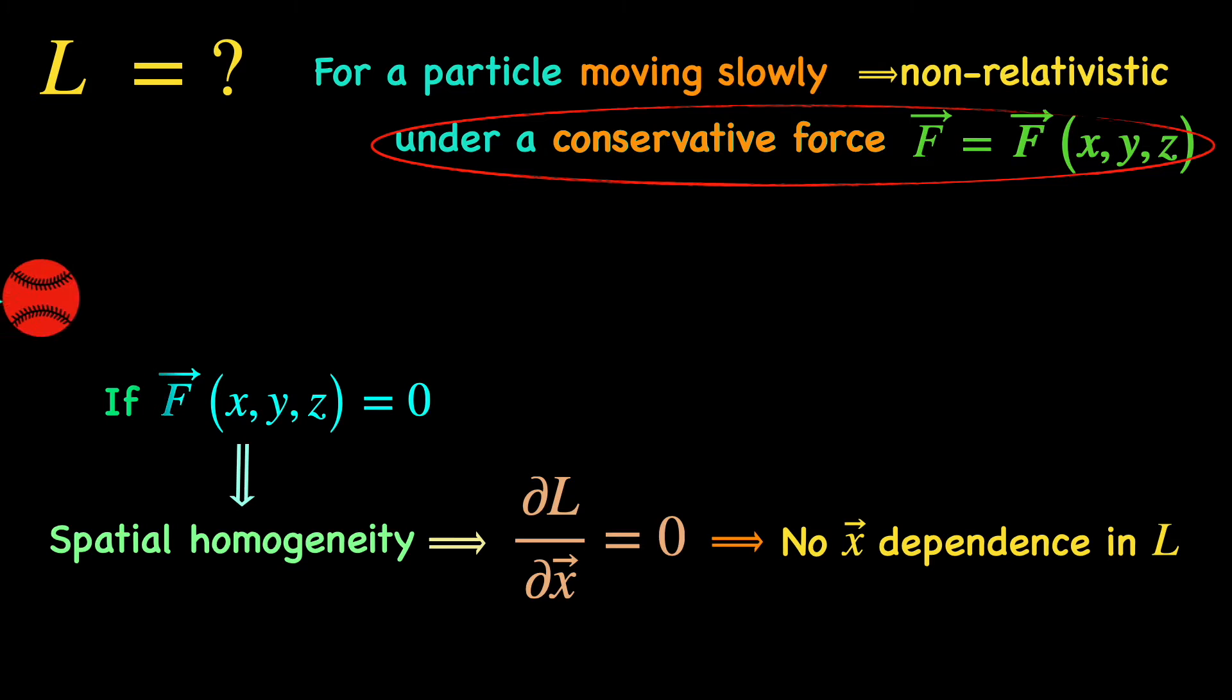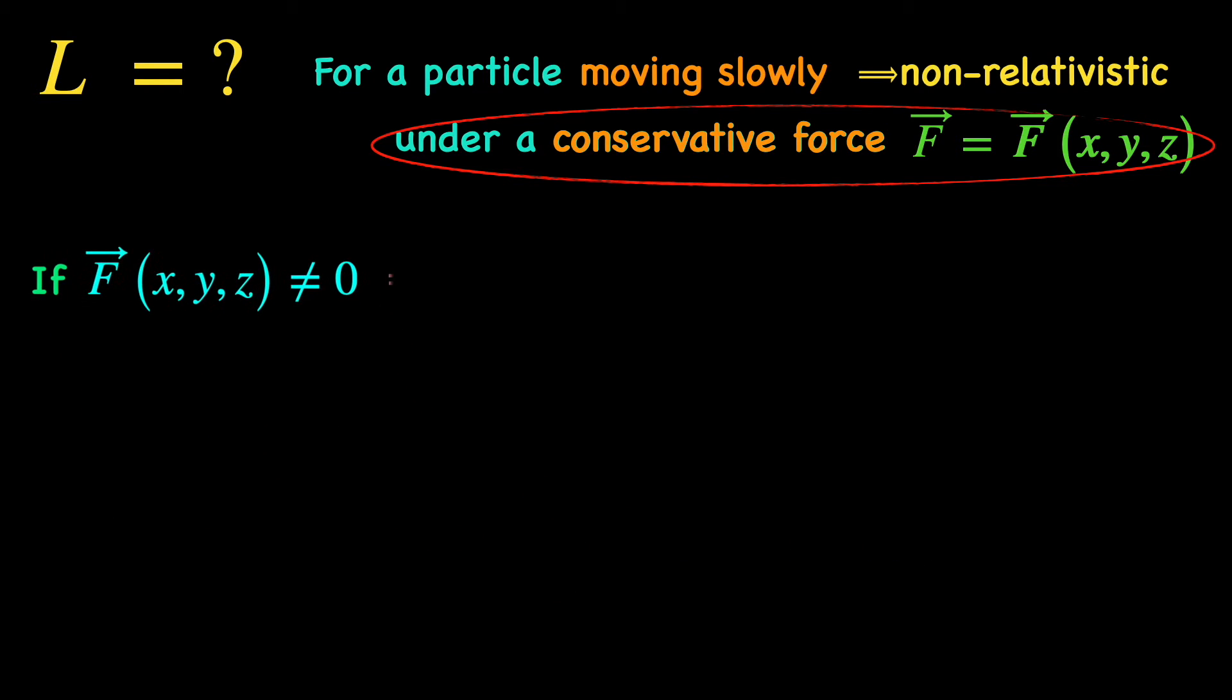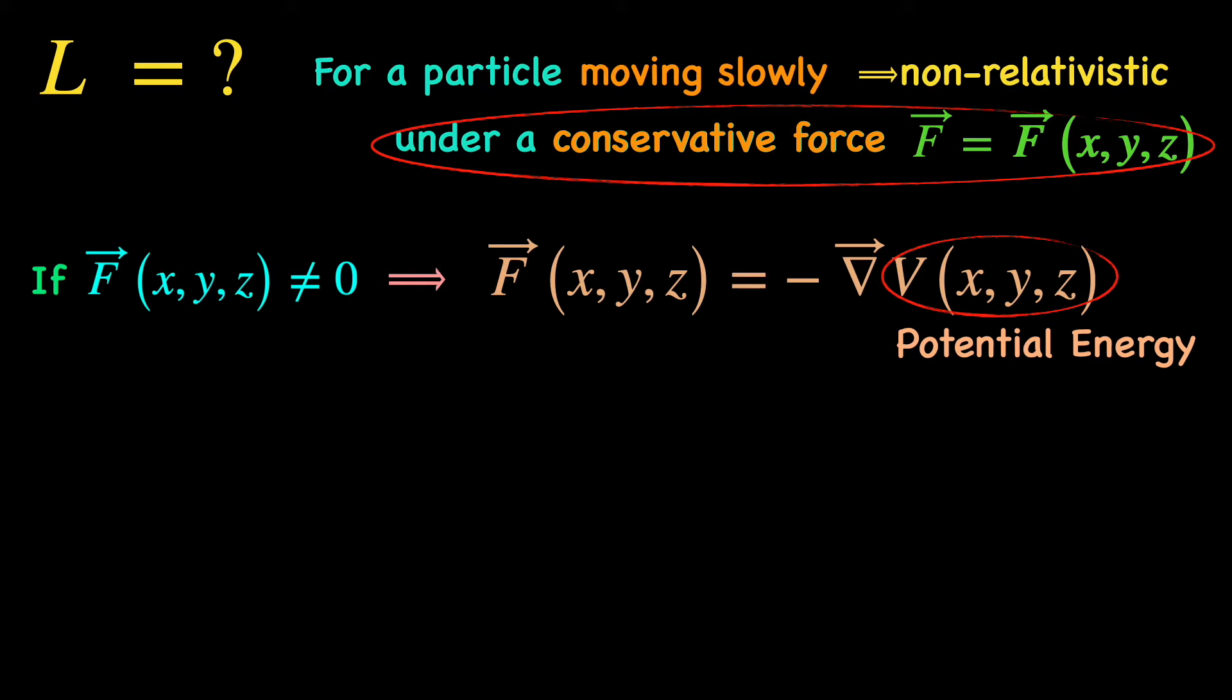But, what if there is a force acting on the particle, a conservative one? That means no spatial homogeneity. So, the Lagrangian does depend on the spatial coordinates this time. In the last video, we have shown that a conservative force is always the negative gradient of some scalar function. This function is called the potential energy of the particle.